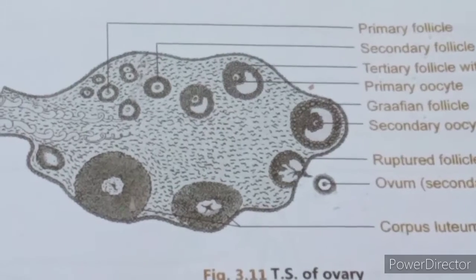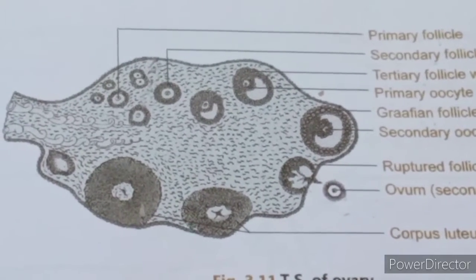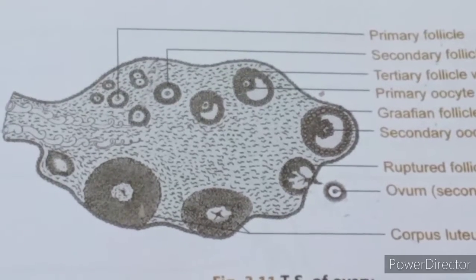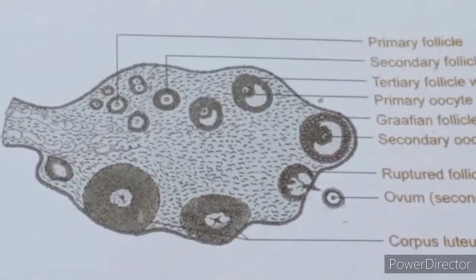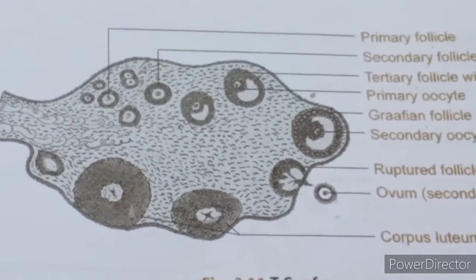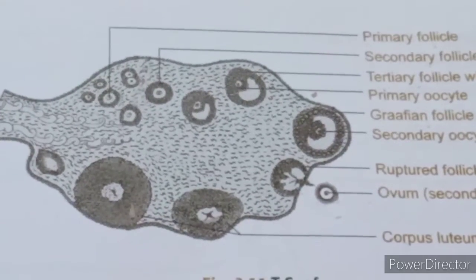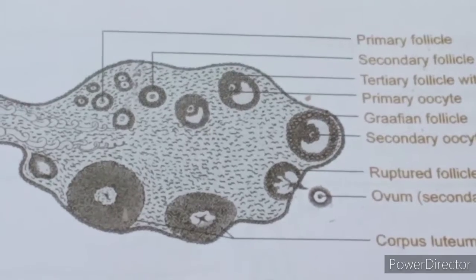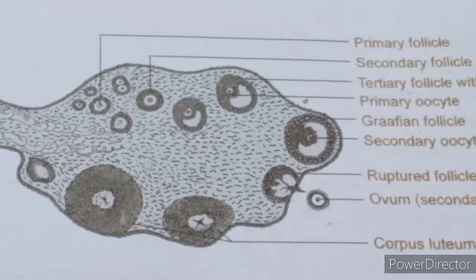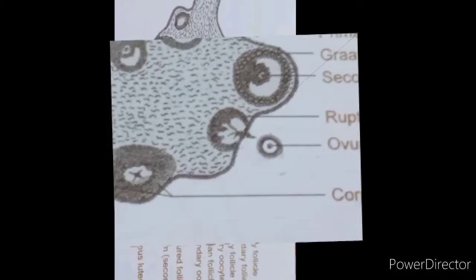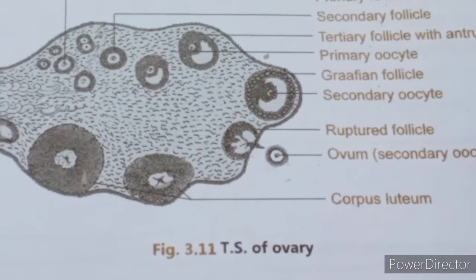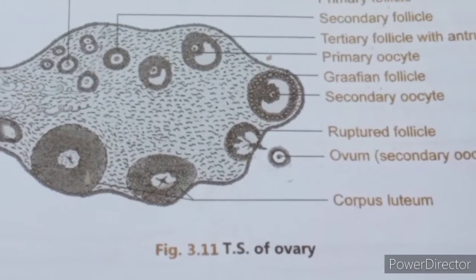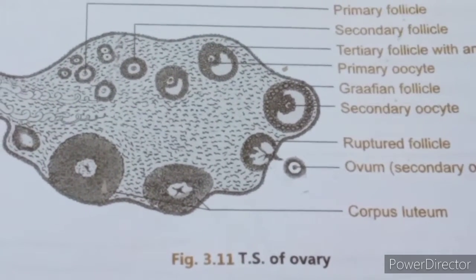Every alternate month, each ovary releases an egg. For example, if the right ovary releases an egg in the first month, then the left ovary releases in the second month, and the right again in the third month. In this manner, the ovaries alternate, and the menstrual cycle takes place every 28 days.